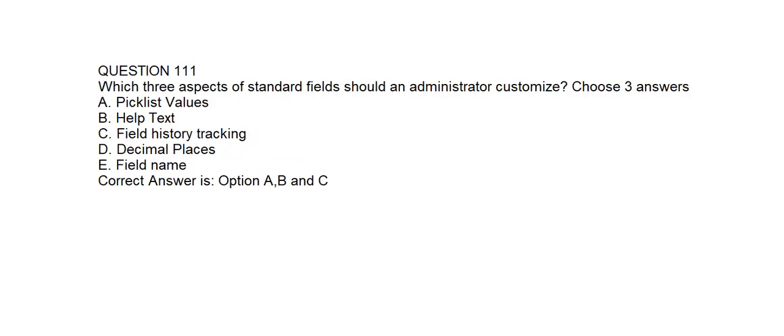Question number one hundred and eleven. Which three aspects of standard fields should an administrator customize? Option A: Picklist values. Option B: Help text. Option C: Field history tracking. Option D: Decimal places. Option E: Field name. Correct answer is Option A, B, and C: Picklist values, help text, and field history tracking.